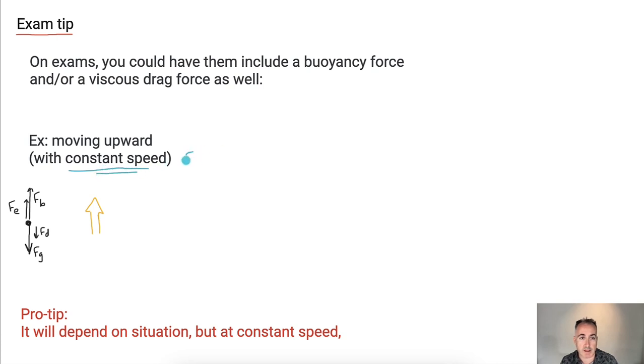But what really matters is that, if you're told it's got constant speed, remember what that means? That means F net equals zero. That means all the upwards forces are equaling and canceling out the downwards forces. So in this case, the upwards forces would be Fe plus FB. And that will equal FD plus FG, the downwards forces. Because when the net force is zero, the upwards forces equal the downwards forces.